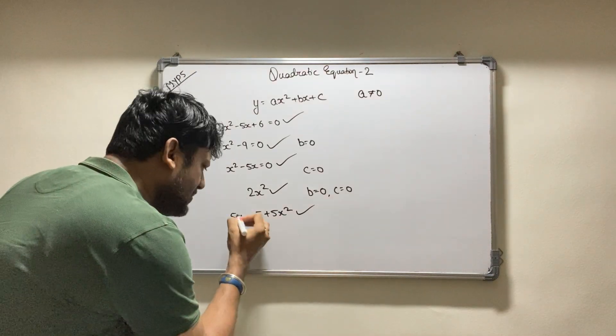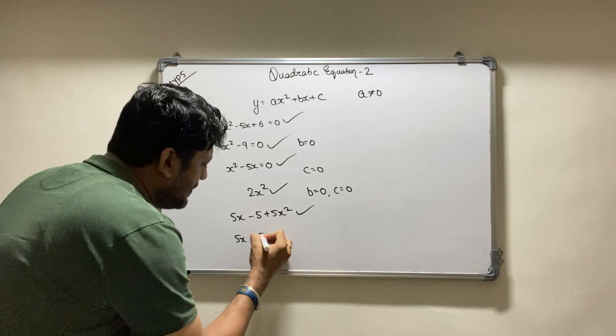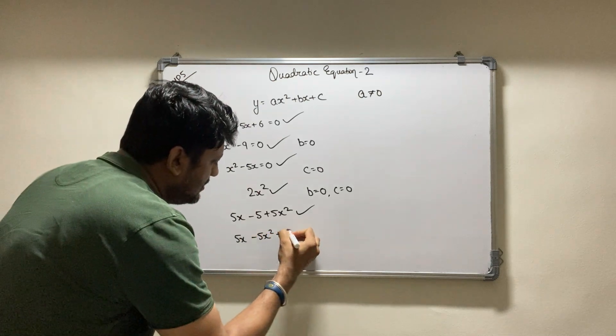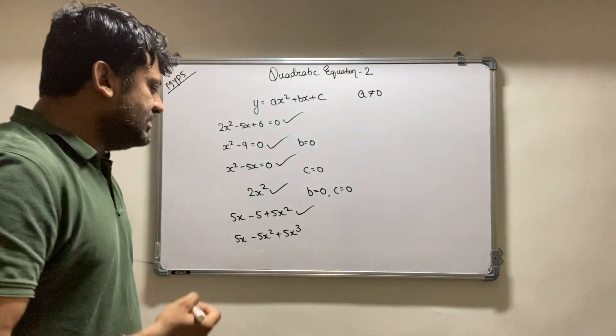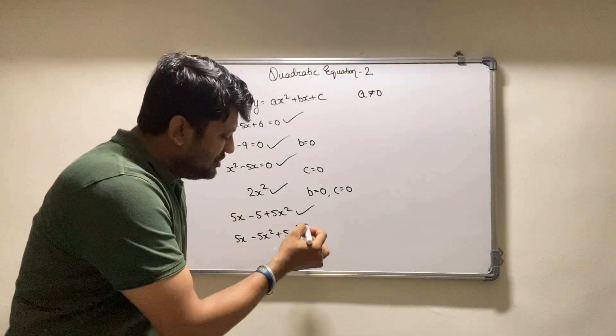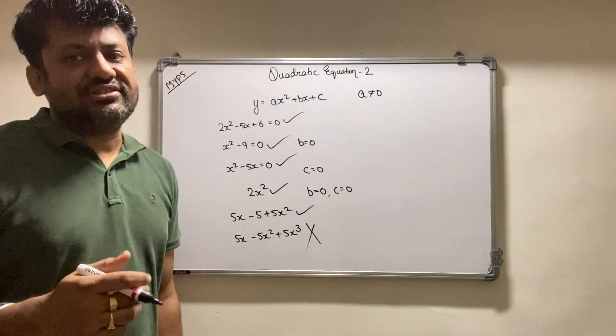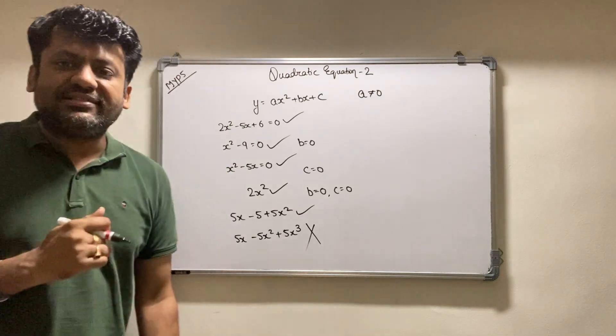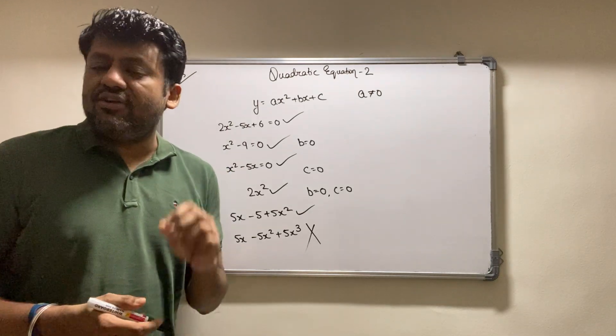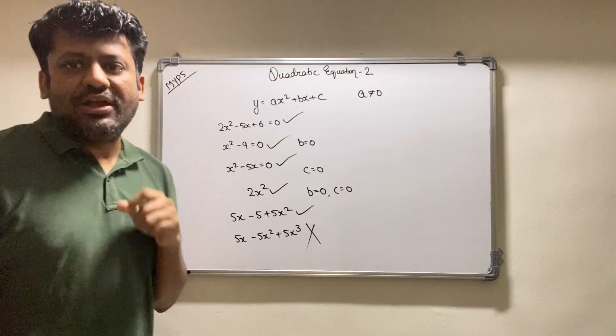One more question on similar grounds: 5x minus 5x squared plus 5x cubed. Is this a quadratic equation? This is not a quadratic equation because the maximum power in this is 3, so this is not a quadratic equation. Hope this makes sense, how you can find any equation as a quadratic equation. Okay, thank you guys.